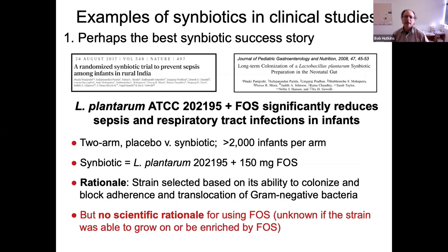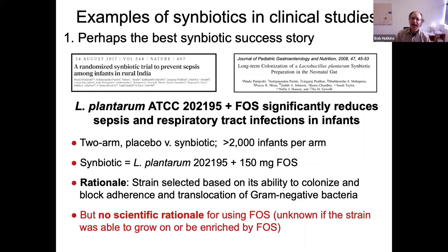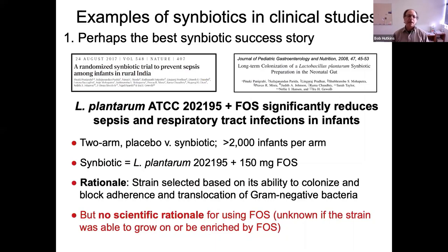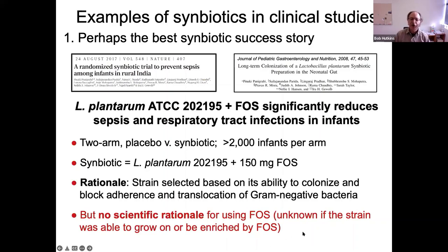Now I'm going to take a critical look at some examples of symbiotics in clinical studies in the literature. I want to start with perhaps the best symbiotic success story to date — the well-known Panacea study — on the effect of a symbiotic on reducing sepsis in infants in India. It was a well-designed study with a large number of subjects, a two-arm design with L. plantarum. The 150 milligrams of FOS looks like a low dose, but don't forget these are infants, so on a per kilogram basis it's a reasonable dose.